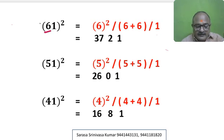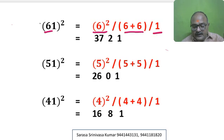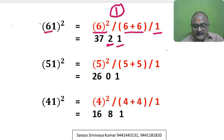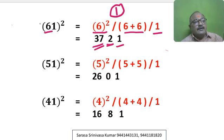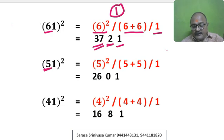61 square: 10th digit is 6. 6 square, 6 plus 6, 1 — we write 1 here; 6 plus 6 is 12, I write 1, 2; 1 is carry forward. 6 square is 36; 36 plus carry forward 1 is 37. So 61 square is 3721.